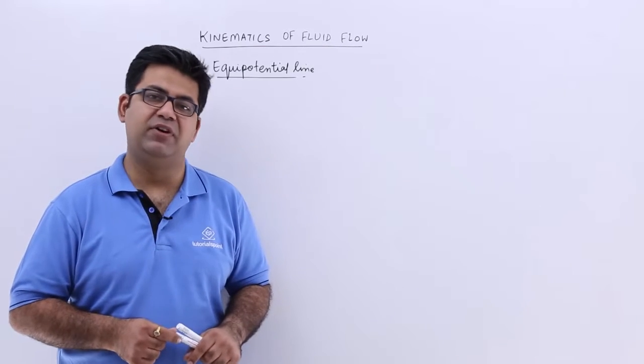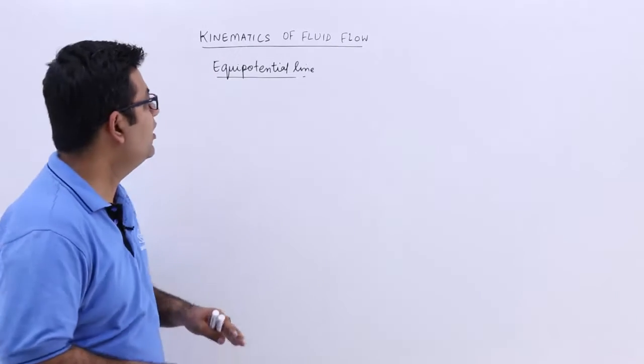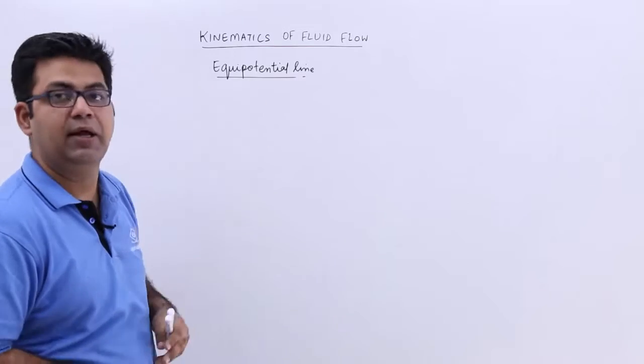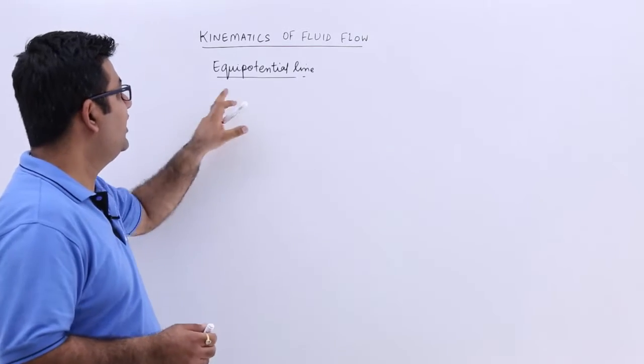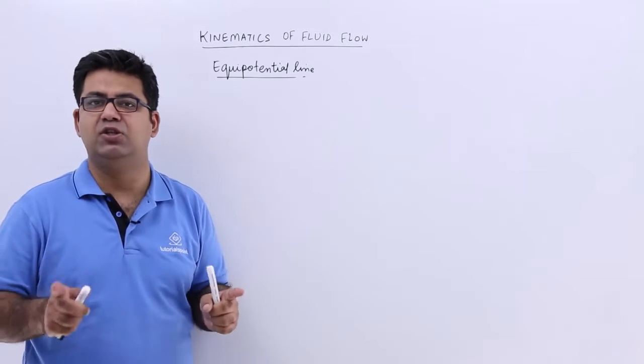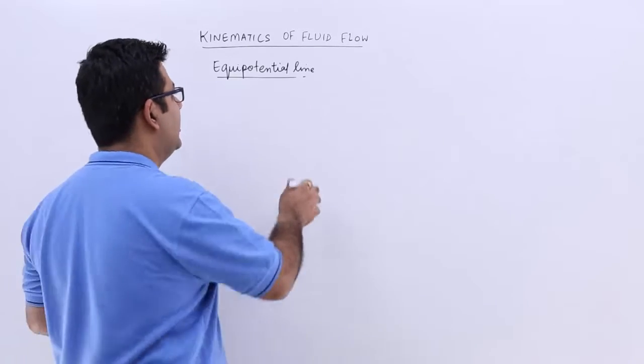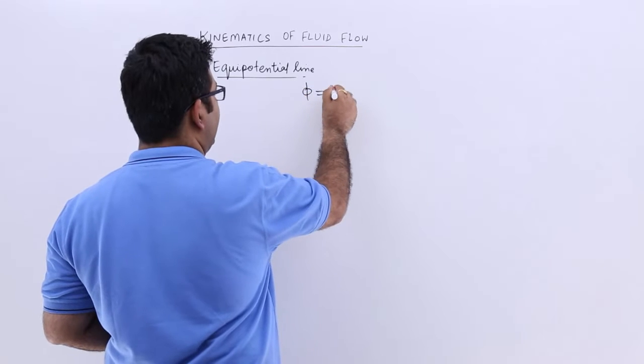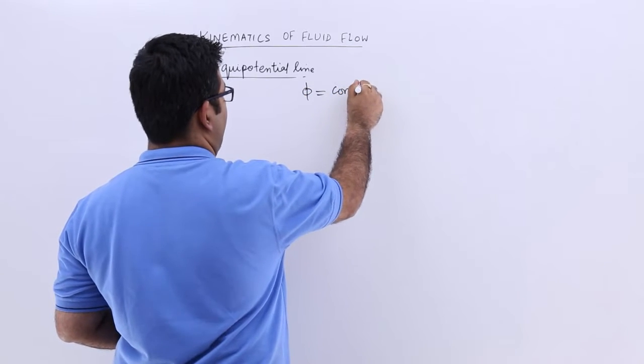After understanding the velocity potential function and the stream function, let's have a look at the equipotential line. Equipotential line is such a line on which the velocity potential is constant. This means that the value of phi would be a constant value.